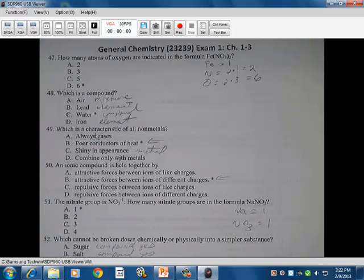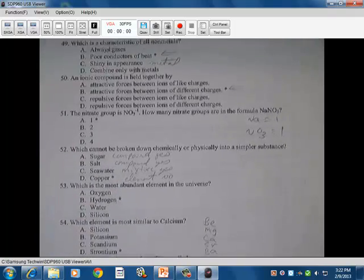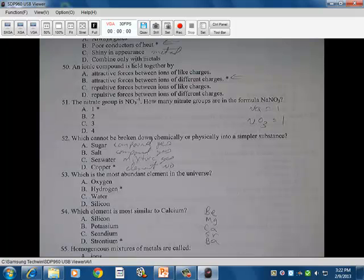50. An ionic compound is held together by the attractive forces between the ions of different charges. That was the definition of ionic compound like sodium chloride. One of the two elements loses the electron. The other one gains it. One becomes positive. One becomes negative. And then you have those attractive forces between those separate charges. And that force of attraction holds them together. The nitrate group is NO3 to the minus one. How many nitrate groups are in this formula? So when you have the sodium and you have it taken one time with nitrate. You have one sodium and one nitrate together. Sodium being positive when it forms. Nitrate being negative. That's balanced. Therefore, there's one.